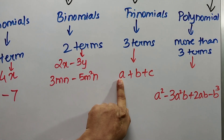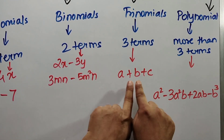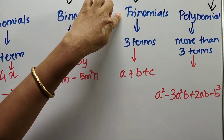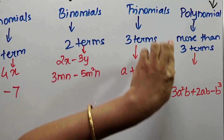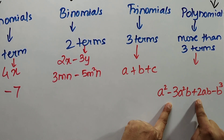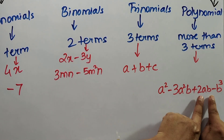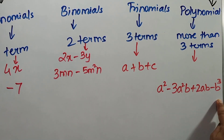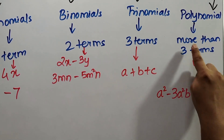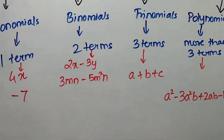Let us see this: a plus b plus c contains three terms — they are three different terms — so they come under trinomials. Now let us see: a square minus 3a square b plus 2ab minus b cube. There are four terms — one, two, three, four. Four terms means more than three terms. When an expression has more than three terms, it comes under polynomials.